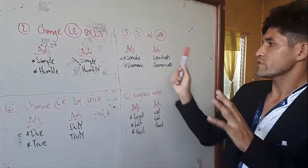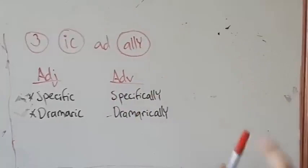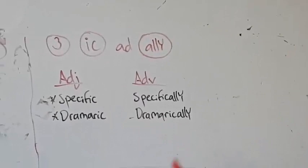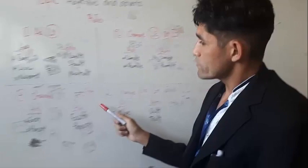The third rule that we have: when the adjective ends in -ic, we need to add -ally. For example, the adjective 'specific' changes to 'specifically.' 'Dramatic' becomes 'dramatically.' This is the third rule that we have.